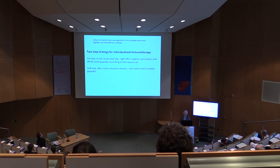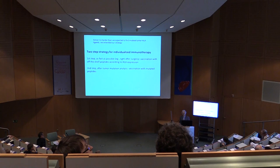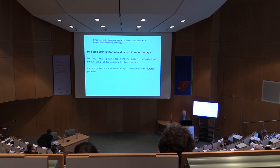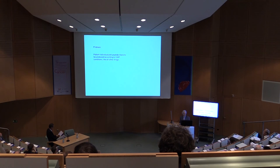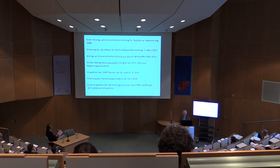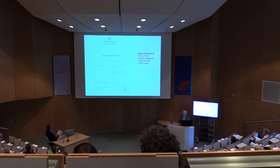Since it is harder than expected to find mutated HLA ligands as peptides — not just as exome sequences — we have amended our strategy. For individualized immunotherapy, we first take non-mutated off-the-shelf peptides, of which we know large numbers. We have a database of several hundred thousand peptides from different tumor entities, which we can prepare off-the-shelf and use very shortly after surgery for vaccination. In the second step, after successful tumor mutation analysis, we would vaccinate with mutated peptides. These peptides must be produced according to GMP conditions, and after seven years of work, we now have the regulatory allowance to produce these peptides for individualized vaccination.